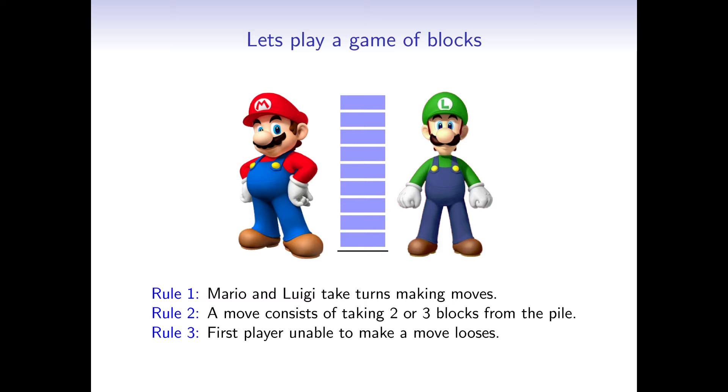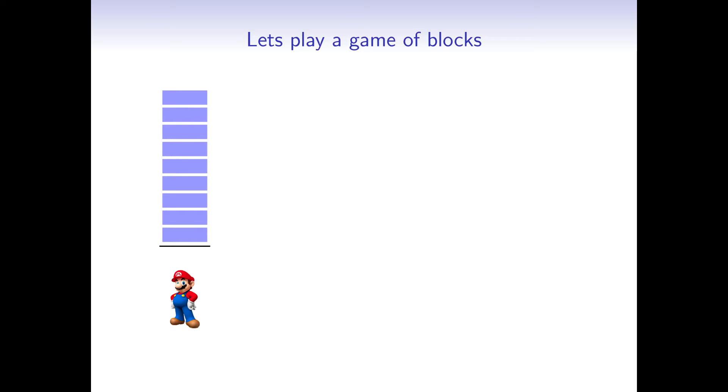Let's see the game in action. Mario starts. He removes the top 2 blocks. This reduces the pile to 7 blocks. Now it is Luigi's turn. He removes 2 blocks as well, which leaves 5 blocks for Mario.